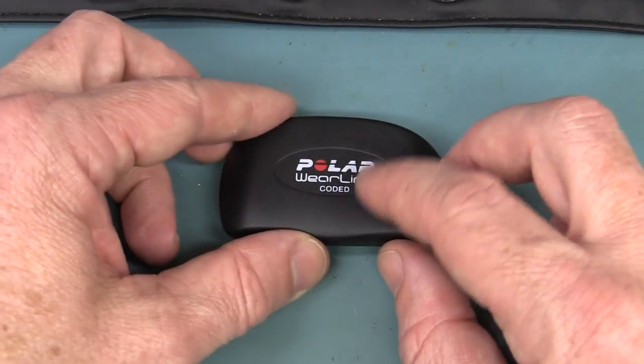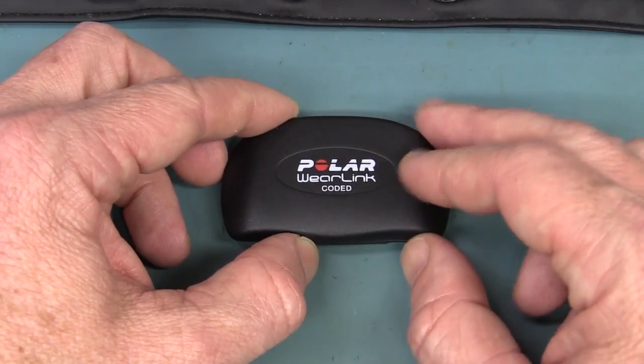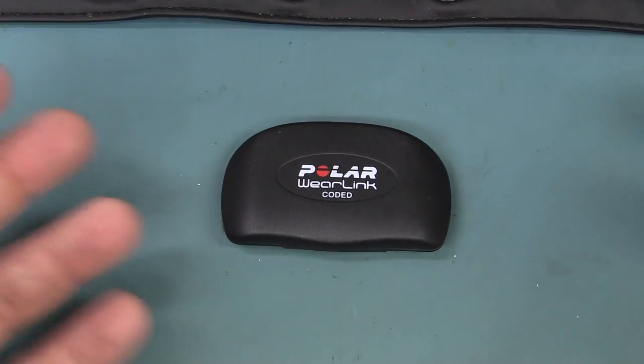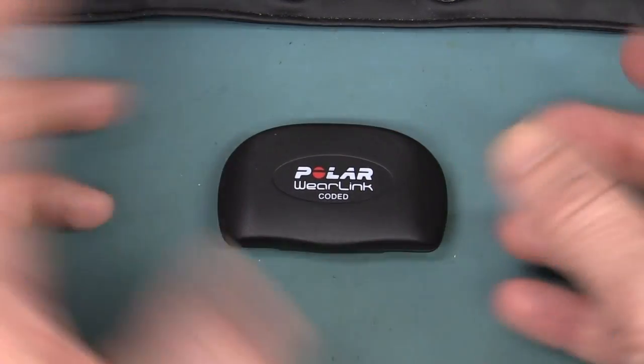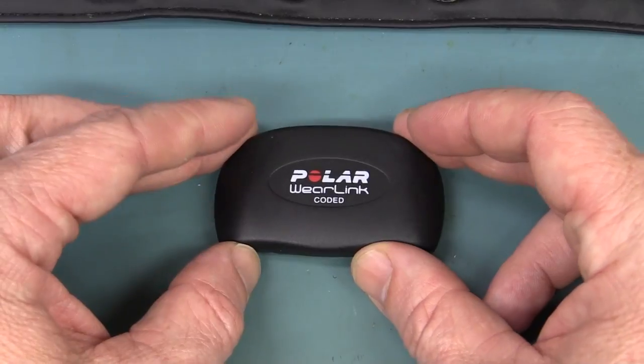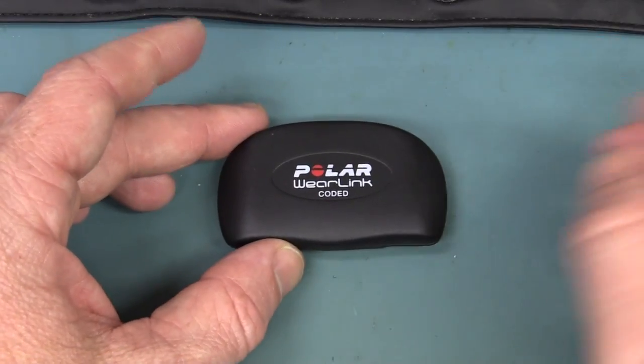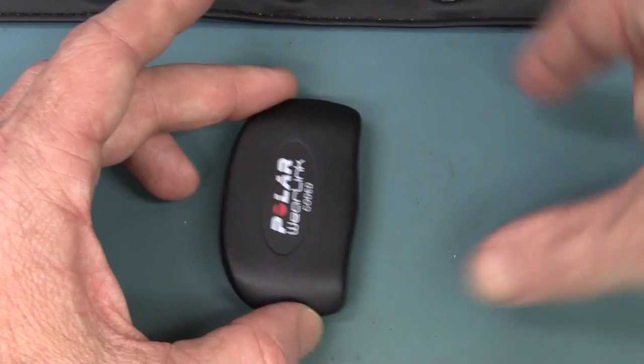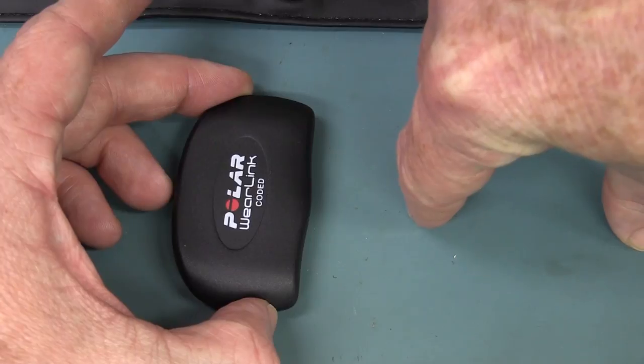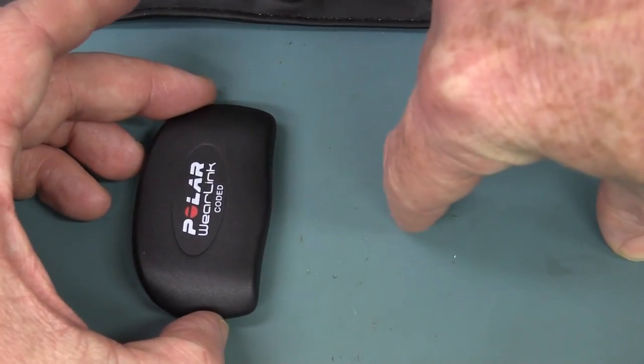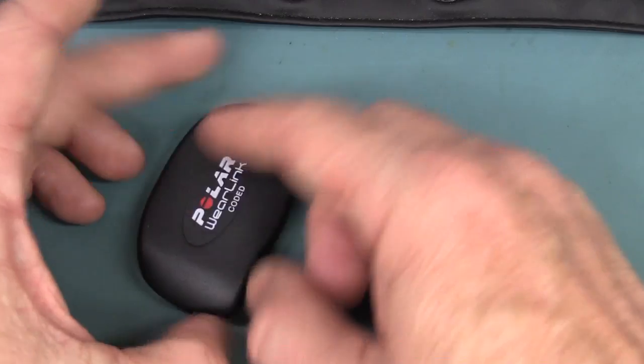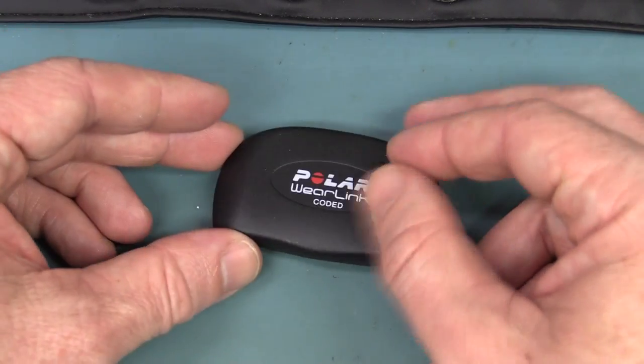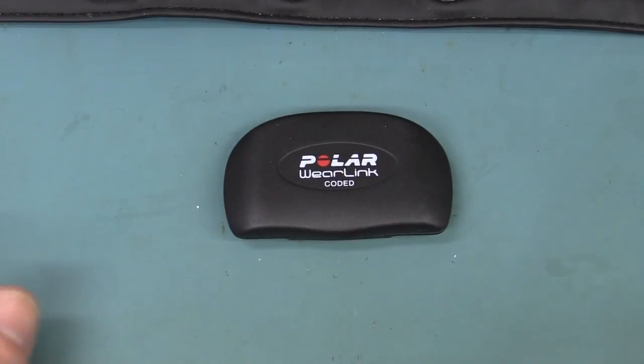And I'll link to a data sheet down below where Polar actually sell a little module that you can get data out of these things. But these are supposedly coded in some way so that you can use more than one in the same area. So two people side by side and they don't interfere. They actually sell a module and they tell you in the data sheet that you have to orient it the right way. So if your board is like 90 degrees to it, it's not going to be nearly as effective. So I'd expect some sort of a coil coupling system inside this thing when we tear it down.